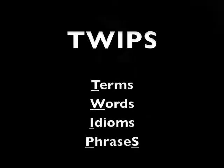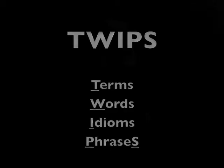When considering what words you might use on a word wall, author Debbie Zakarian uses the acronym TWiPS to help teachers and students consider vocabulary as key terms, words, idioms, and phrases. These are all areas in which English language learners can benefit from direct instruction.